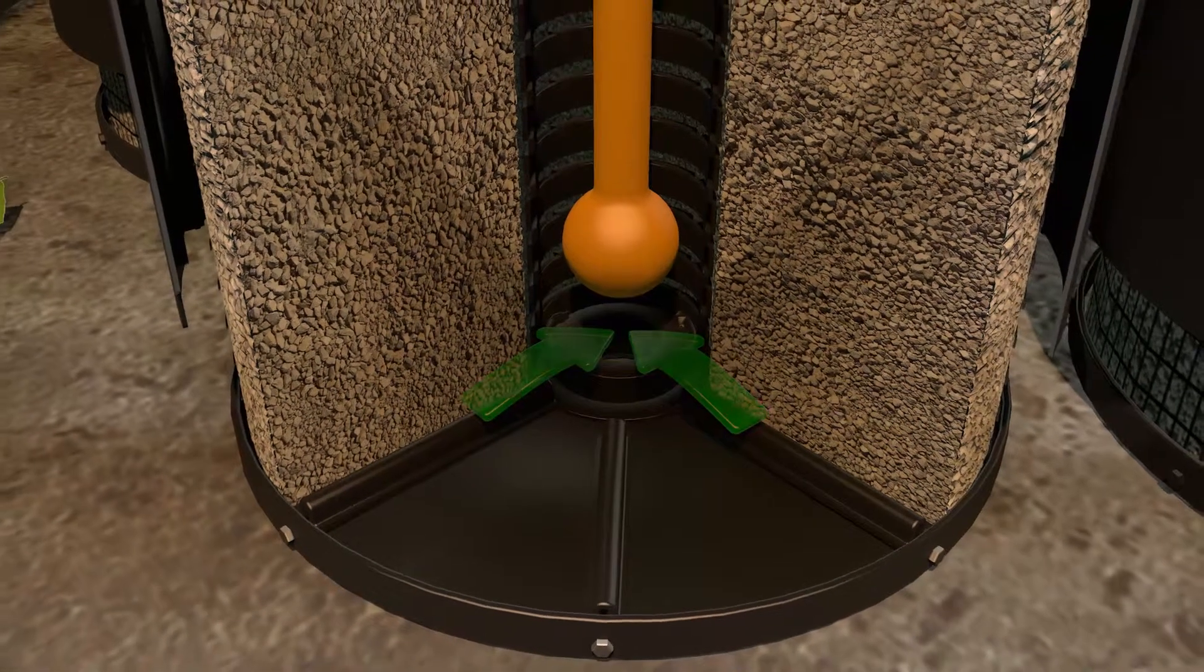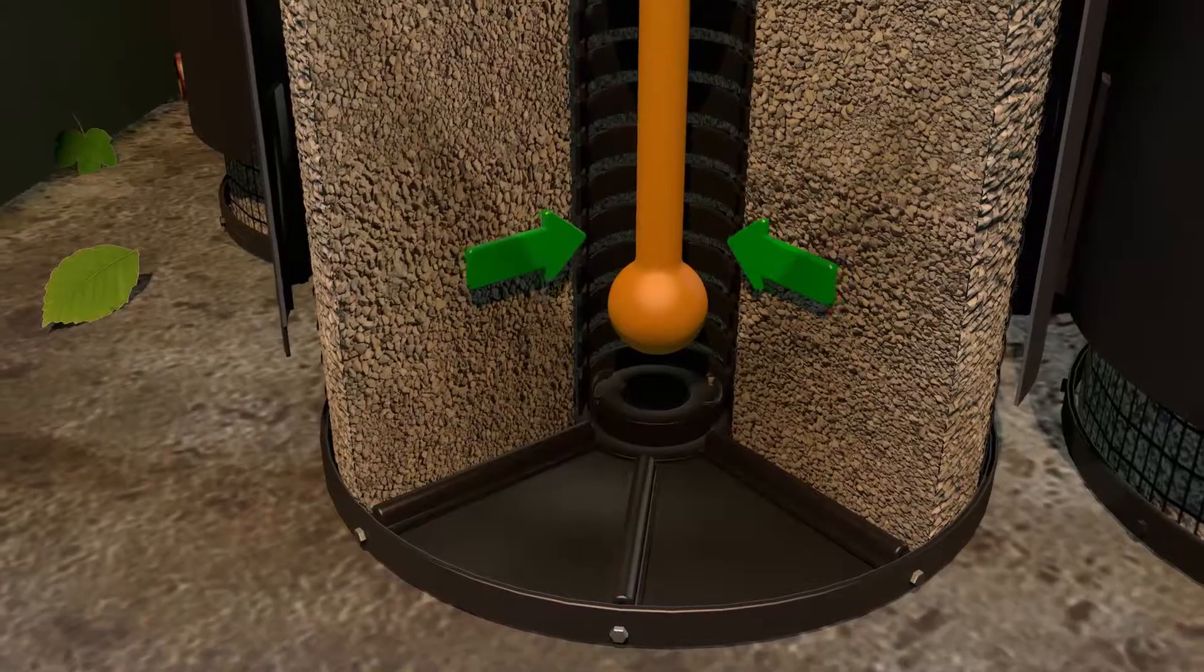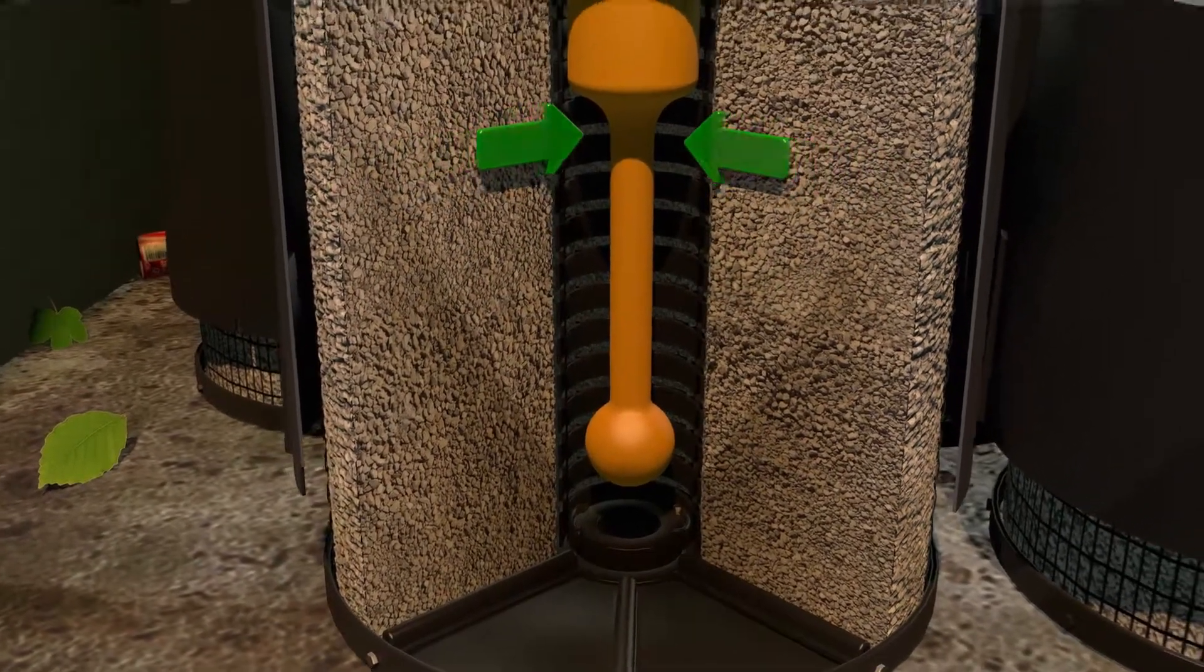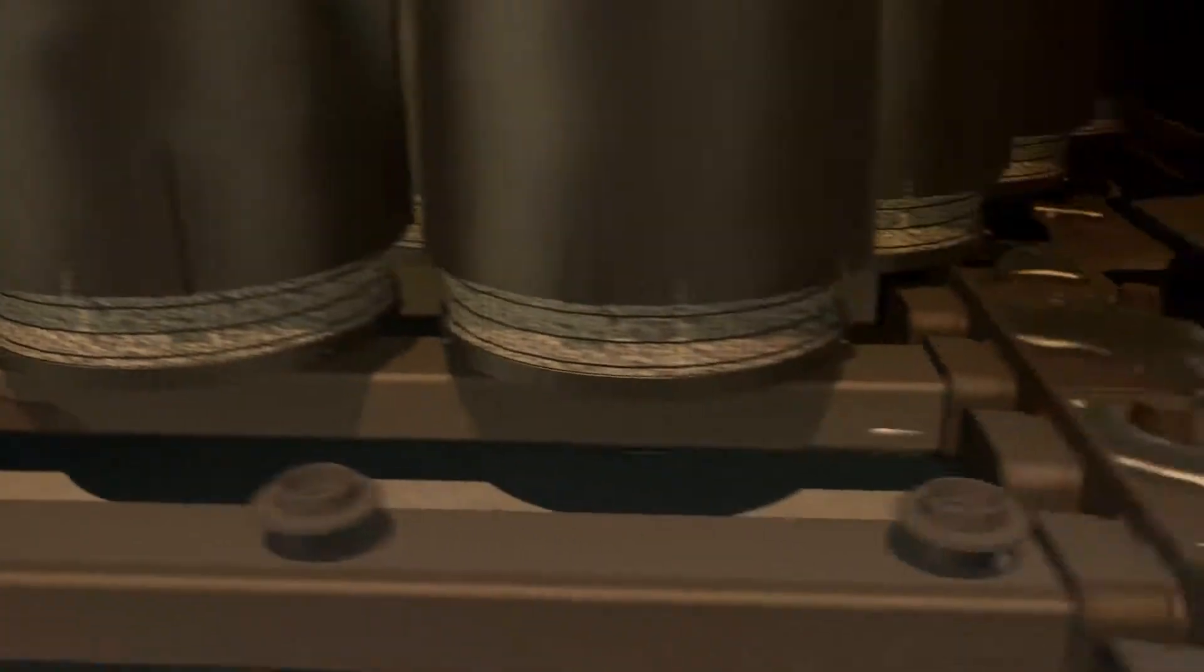A one-way check valve then closes, activating a siphon that draws polluted stormwater evenly through the filter media and into the center drainage tube. Filtered water then discharges out of the system through the under-drain manifold.